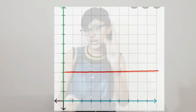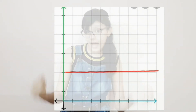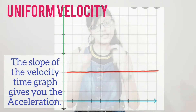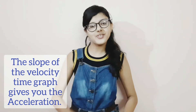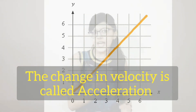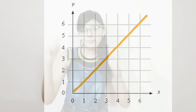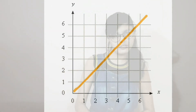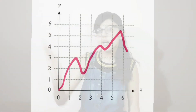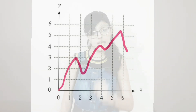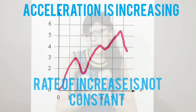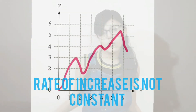Quick revision: a straight line parallel to the x-axis in a velocity-time graph shows the body is moving at uniform velocity. A straight line that is not parallel to the x-axis indicates the body is undergoing uniform acceleration. A curved line indicates that acceleration is increasing, but the rate of increase is not constant.